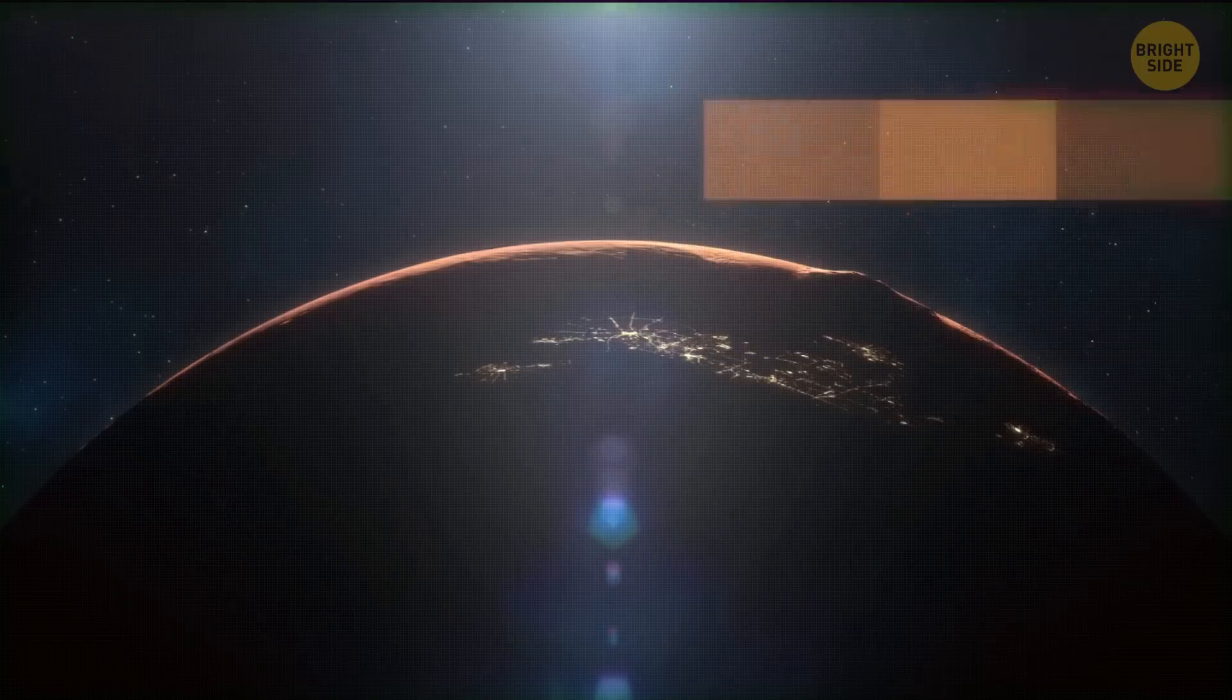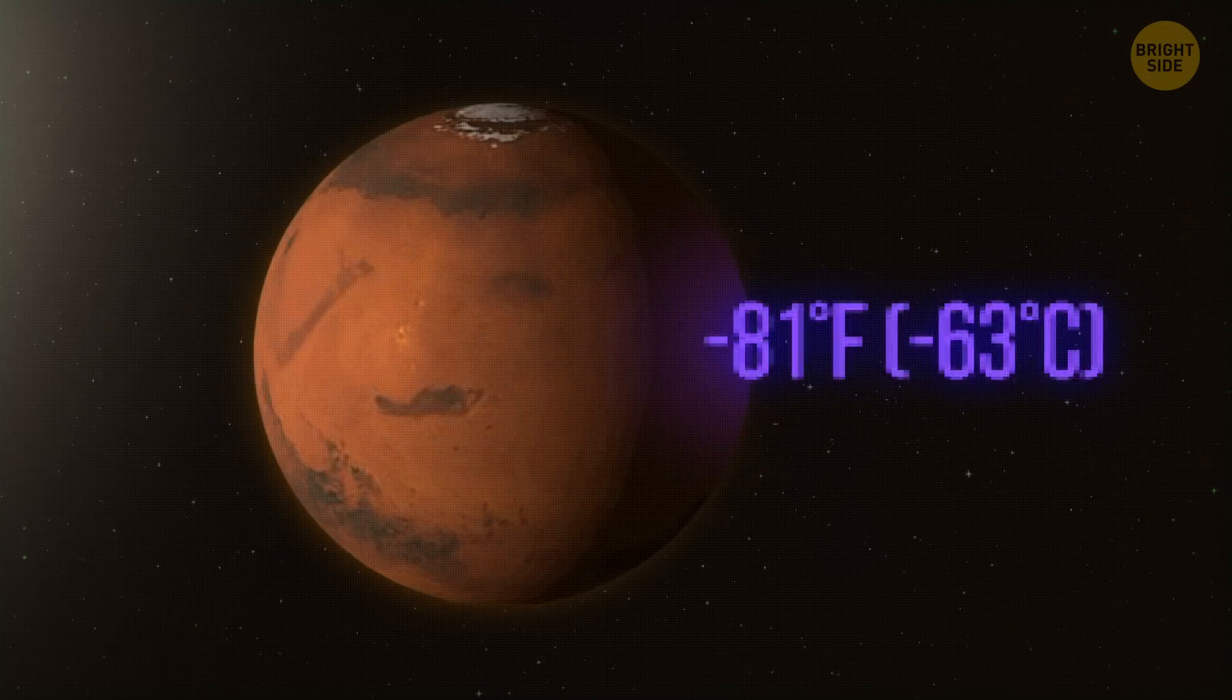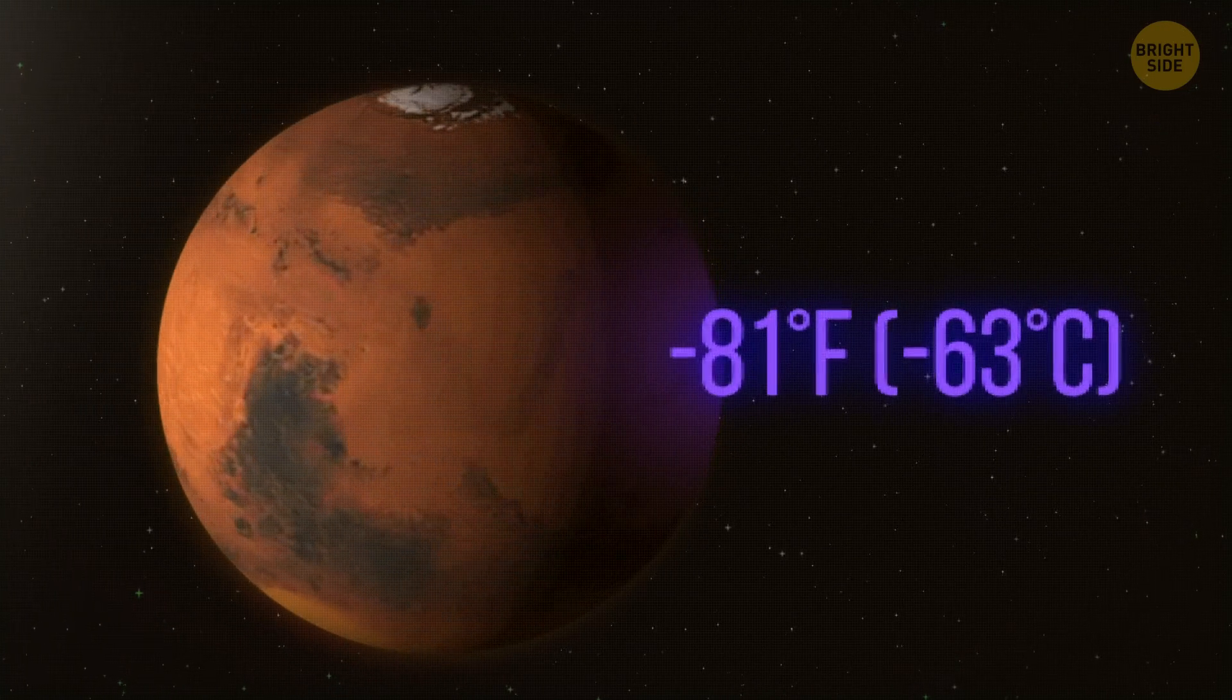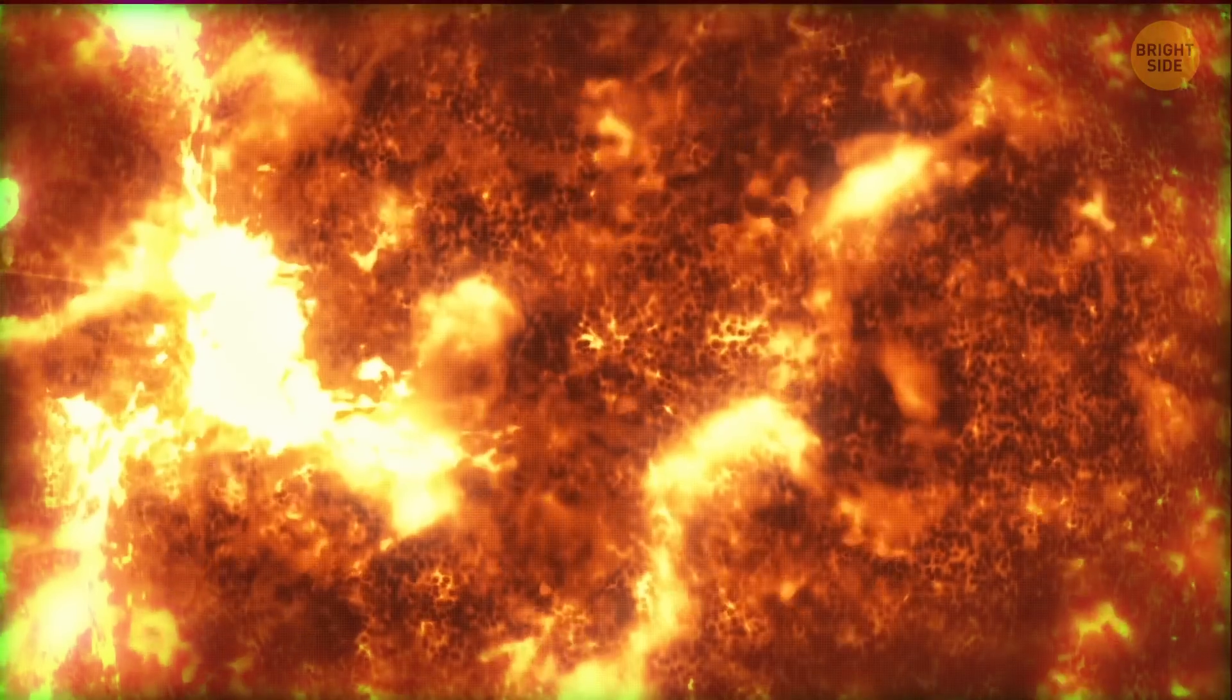We also need to raise the temperature of the surface. Our goal is about 68 degrees Fahrenheit. Right now, it's about negative 81 degrees Fahrenheit on average there. Then, we need an ozone layer, like on Earth. It should protect us from solar radiation.